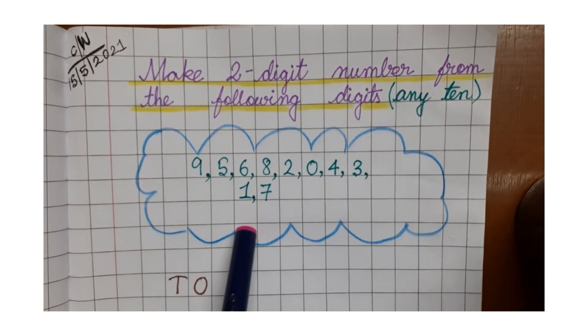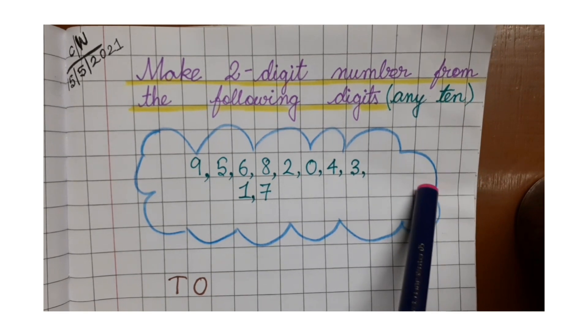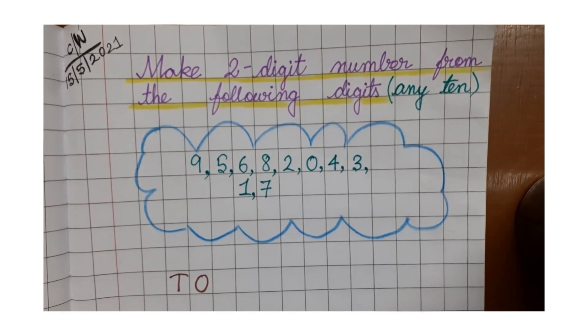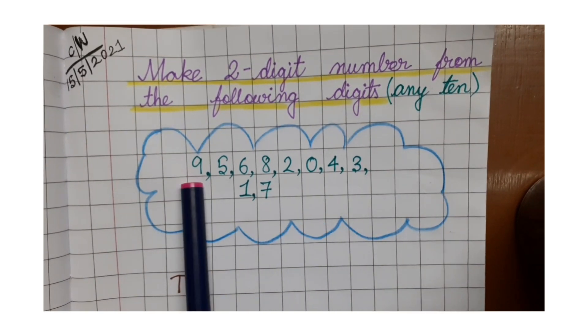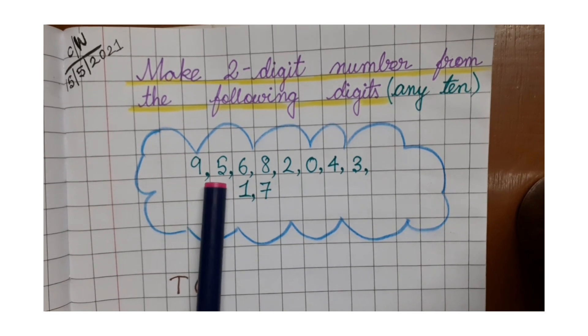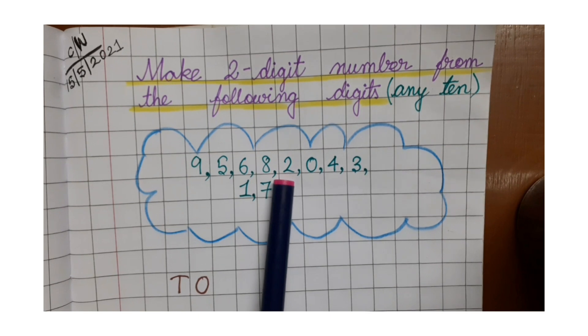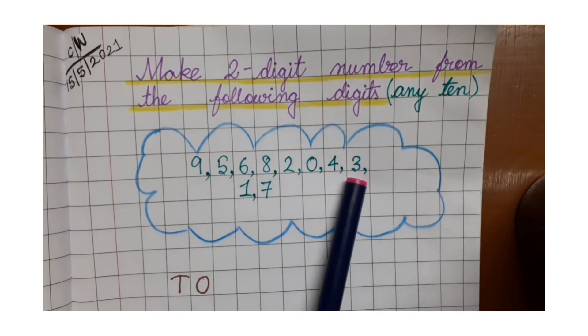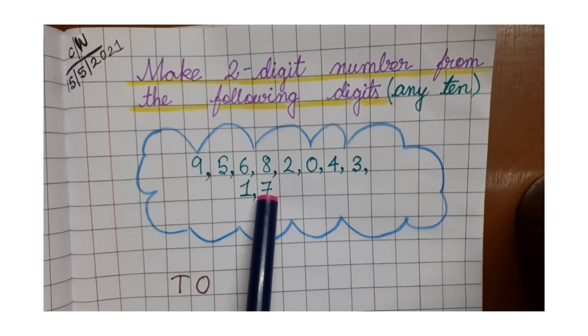Now see inside this cloud. You can see we have a light blue color cloud here. Inside this cloud we have some numbers. The numbers are nine, five, six, eight, two, zero, four, three, one, seven. You can see this.